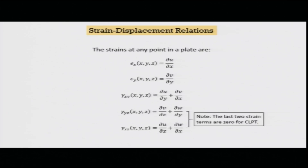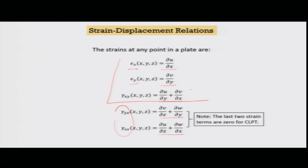Once we know the deflections, the most critical part is done. We apply the strain definitions: ε_x = ∂u/∂x, ε_y = ∂v/∂y, γ_xy = ∂u/∂y + ∂v/∂x, γ_yz = ∂v/∂z + ∂w/∂y, and γ_xz = ∂u/∂z + ∂w/∂x. For Classical Laminated Plate Theory, the γ_yz and γ_xz terms are considered zero. We are left with only three strain terms: ε_x, ε_y, and γ_xy.